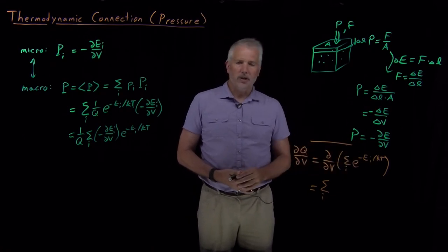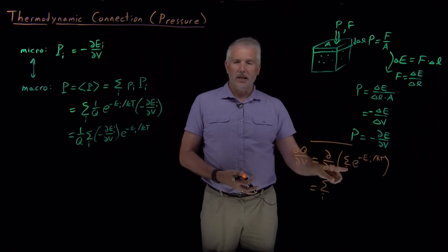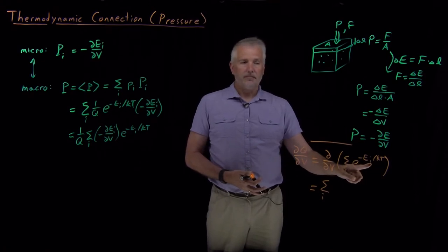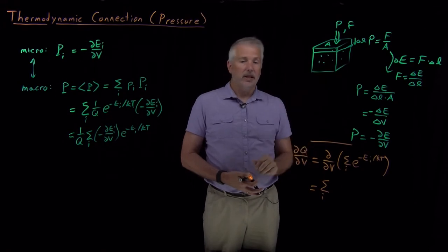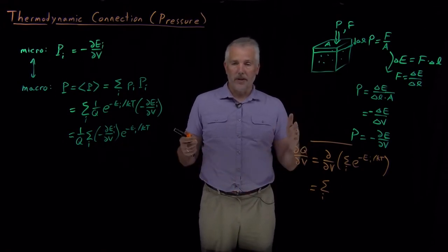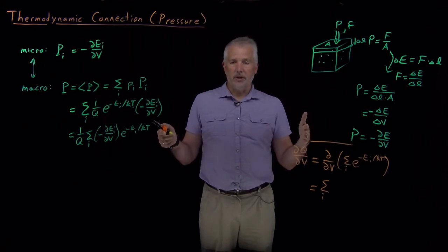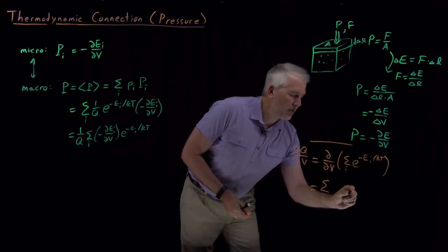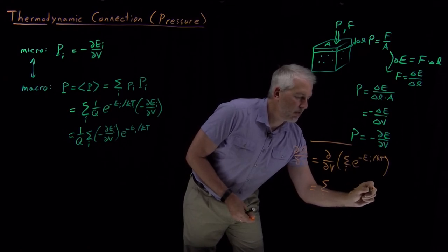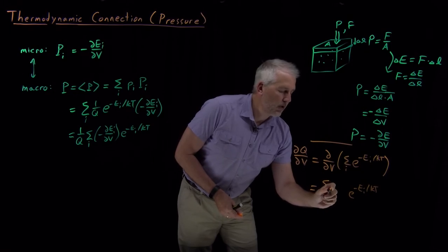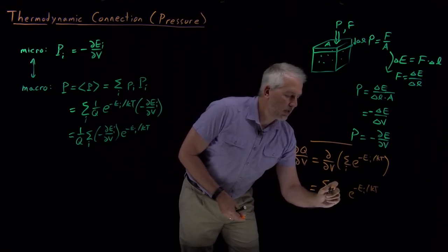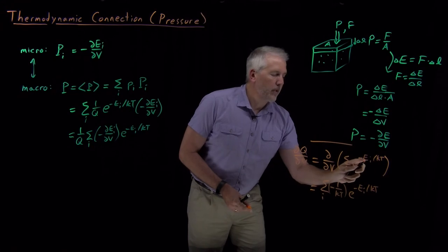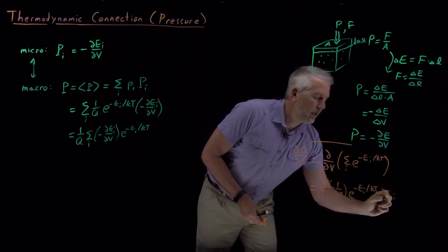We need to take the volume derivative of e to the minus energy over kT. The volume isn't written explicitly, but the energies of the system do depend on volume. We've seen this for a particle in a box — when you confine something to a smaller box, its energy changes. The derivative of an exponential is the exponential multiplied by the derivative of the exponent: that gives us minus 1 over kT times the derivative of energy with respect to volume, all times the Boltzmann factor.